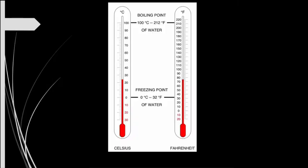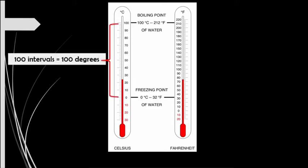To know the conversion of Celsius to Fahrenheit and vice versa, let us understand its basis. The freezing point of water in the Celsius scale is 0 degrees, and its boiling point is 100 degrees. Between 0 and 100, there are 100 intervals or divisions, and each interval is called a degree.